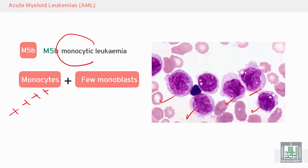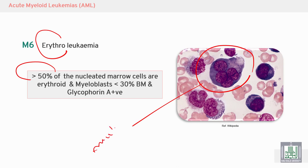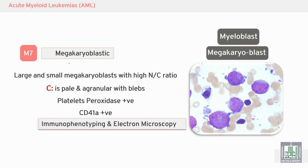M5b is monocytic leukemia with many monocytes and few monoblasts. M6 is erythroleukemia — more than 50% of the nucleated cells are erythroid. Erythroid cells may be multinucleated, and myeloblasts are also present in M6.